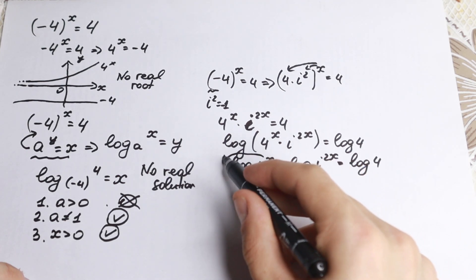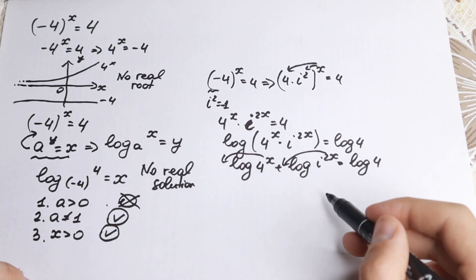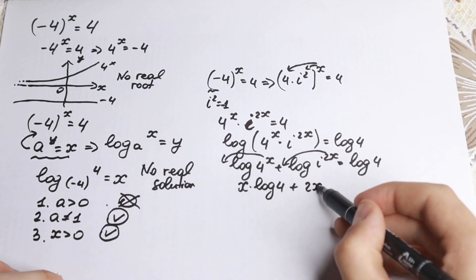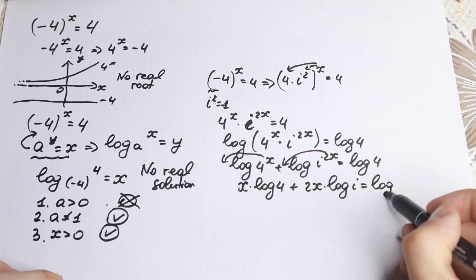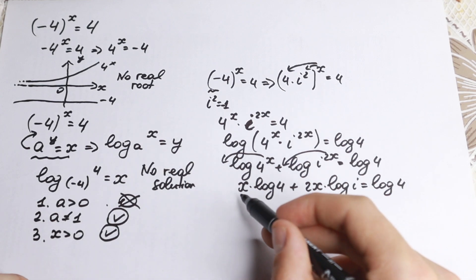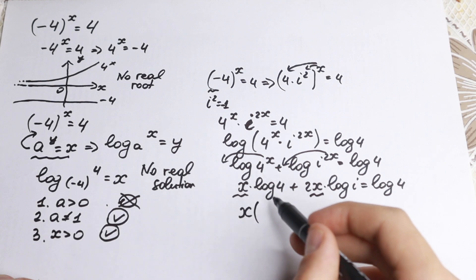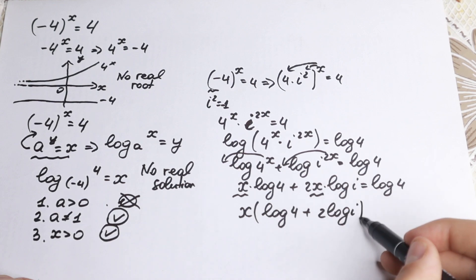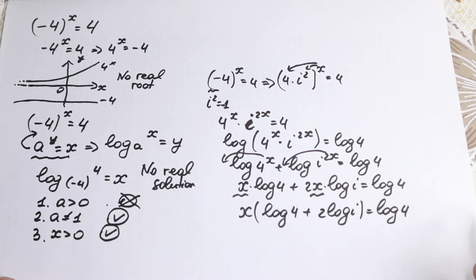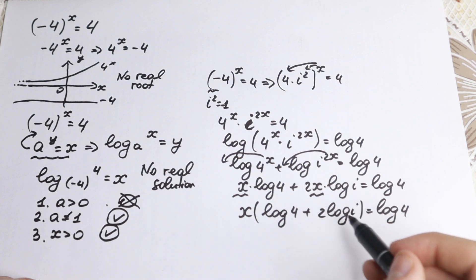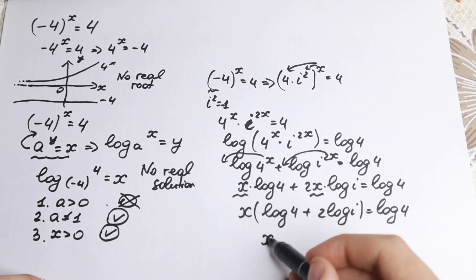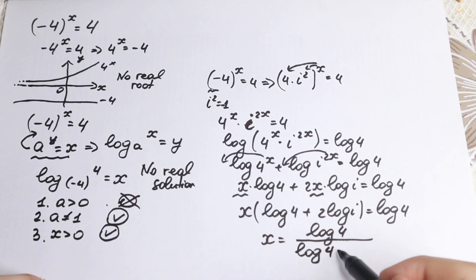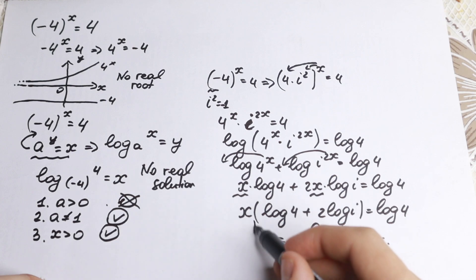Bringing the exponents down using the log power property: x times log 4 plus 2x times log i equals log 4. Now x is a common factor, so we factor it out: x times (log 4 plus 2 log i) equals log 4. Finally, dividing both sides by the parenthesis, x equals log 4 over (log 4 plus 2 log i). This is our solution.